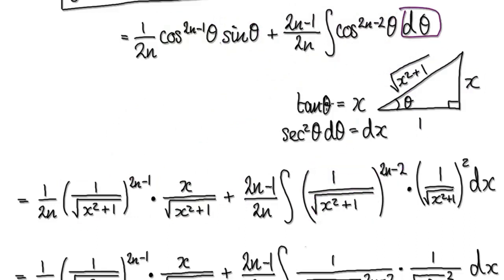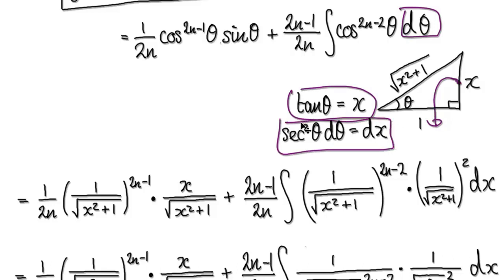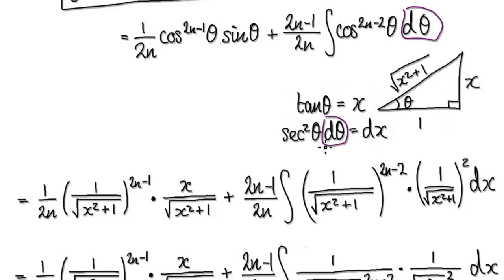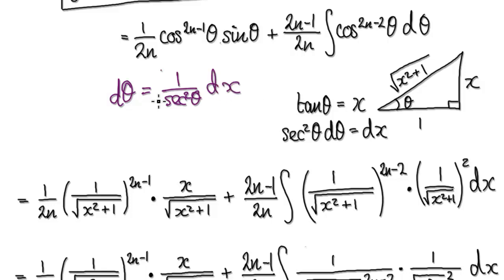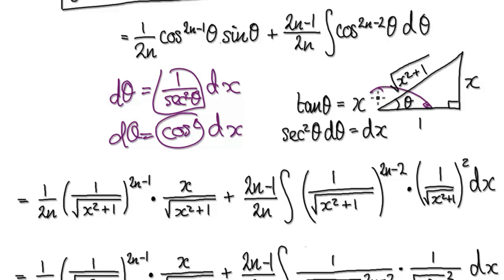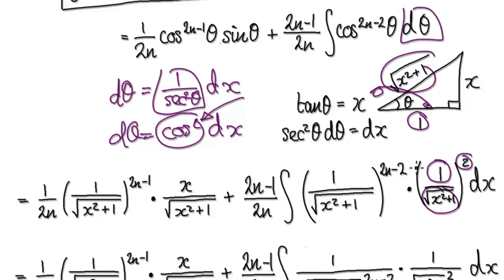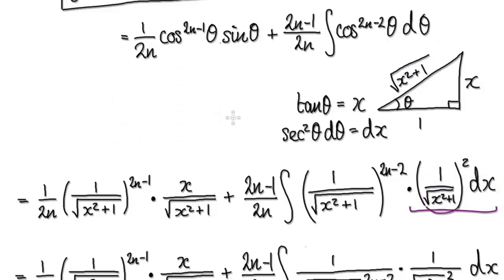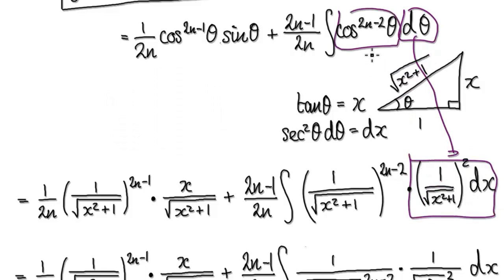Now we need to translate the d-theta term. Looking at tan theta equals this, we need to extract d-theta. Dividing both sides by secant squared, d-theta equals 1 over secant squared theta times dx, which is really equal to cos squared dx. Cos is adjacent over hypotenuse, squared. So this d-theta becomes this expression, and this dx is this dx here.